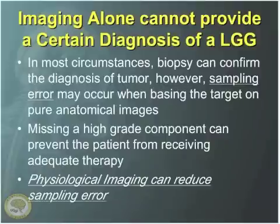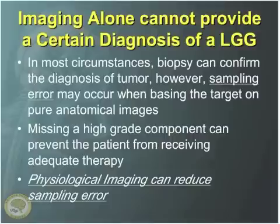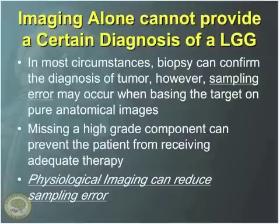If you've decided to do a biopsy — say we're dealing with a very diffuse lesion that we're not going to resect — it's very important to understand that using MRI to do that biopsy is going to provide very limited information. There's another way around it: using what we call physiologic imaging to reduce the sampling error.